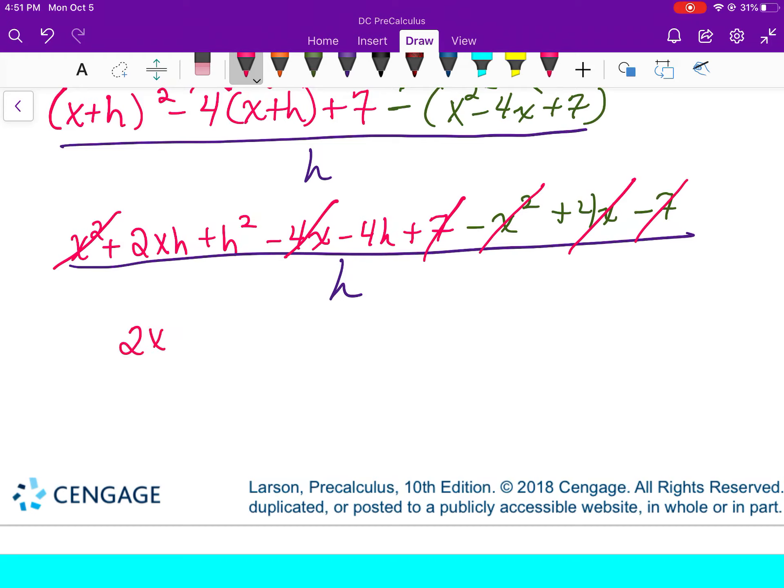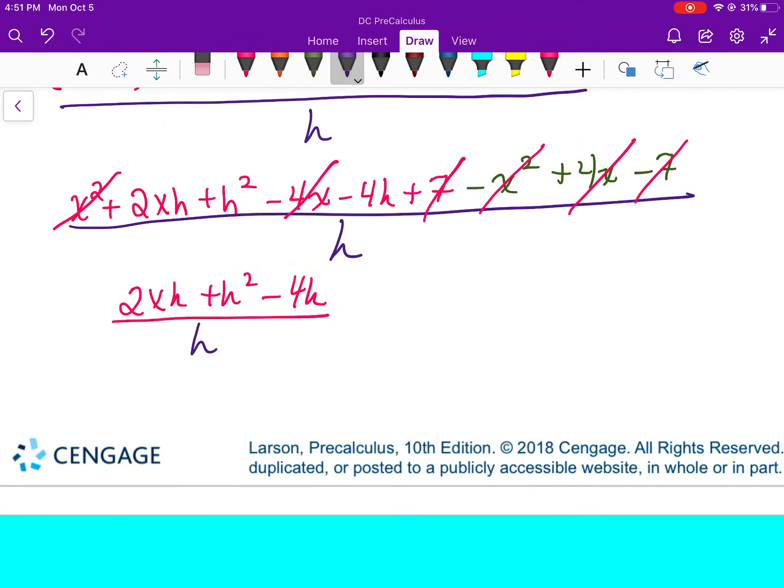All I have left is 2xh plus h squared minus 4h, all divided by h. Every one of the terms on top has an h in it, so I can factor that out. And divide that by the h on the bottom. These are going to cancel, divide out. And my answer is 2x plus h minus 4.